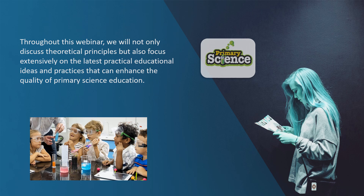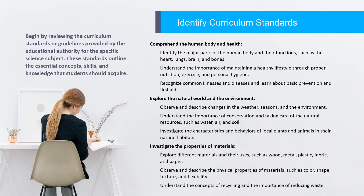Here are the key steps involved in mapping a coursebook in a primary science subject. Step 1: Identify curriculum standards. Begin by reviewing the curriculum standards or guidelines provided by the educational authority for the specific science subject. These standards outline the essential concepts, skills, and knowledge that students should acquire. Here are some examples of curriculum standards for a primary school science subject, specifically in the field of biology.